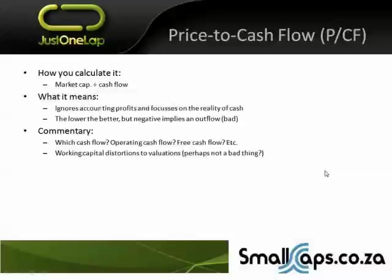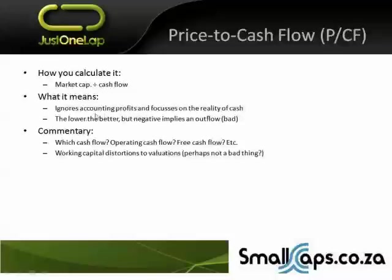Then we have the price to cash flow model. It's simple: market cap divided by cash flow. There's a theory in the market that the only real profits are cash, because accounting profits can be manipulated. So the price to cash flow model ignores accounting profits and sometimes even takes into account CapEx and reinvestment. It focuses on the reality of cash — the lower, the better. But the problem is which cash flow? Operating cash flow? Free cash flow? Free cash flow tends to be operating cash flow less CapEx reinvestment. Is it historic or forward cash flow? It can be very different.